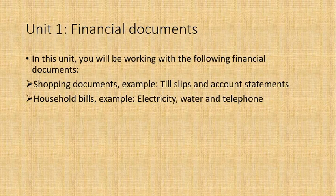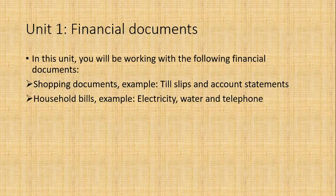Let's start. Unit one is financial documents. The documents you're going to work with in unit one are the following: shopping documents, and those are till slips and account statements. Everybody knows what a till slip is. Most of you have gone and bought groceries with your parents, or you pay at the cafeteria and buy things. You get a till slip.